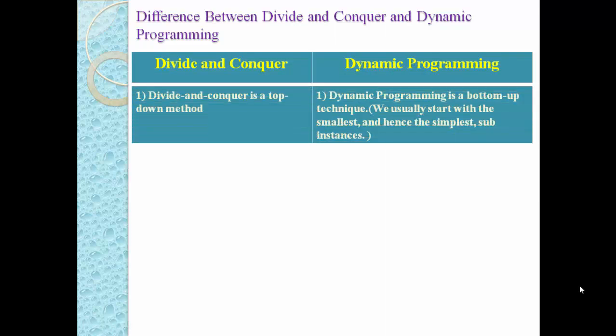The first difference: divide and conquer is a top-down method, and dynamic programming is a bottom-up technique. In divide and conquer, we start from the main problem, divide it into subproblems continuously until we get separate elements, then merge solutions. In dynamic programming, we usually start with the smallest and simplest subproblems — hence it is called the bottom-up technique.